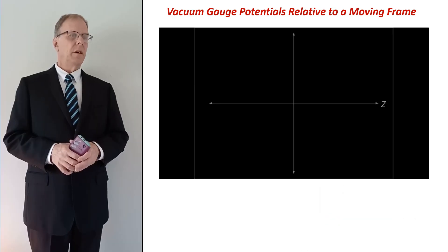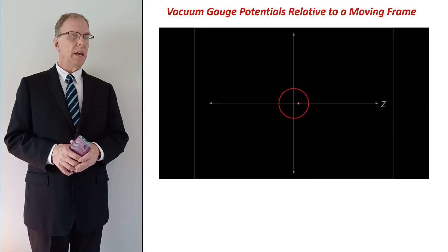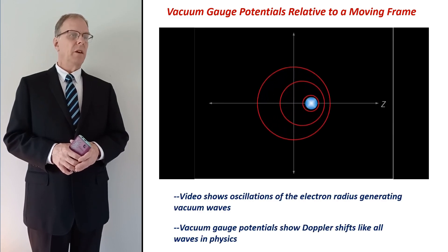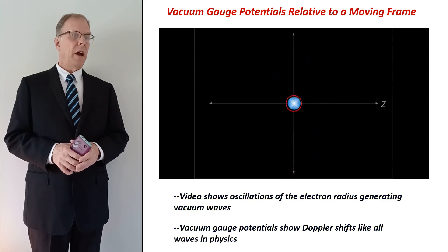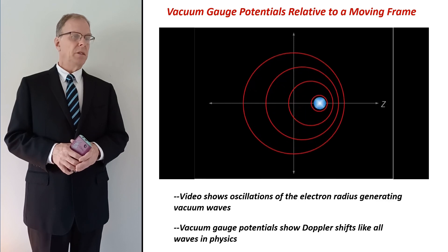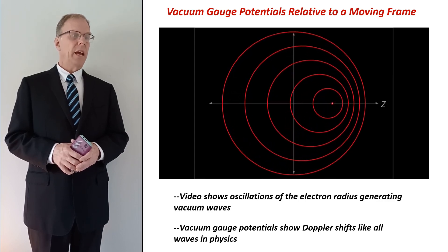Here's an illustration of what vacuum gauge potentials look like in space. This video clearly shows oscillations of the radius vector of the electron, generating vacuum waves as it moves to the right. The doppler nature of the field should be very familiar to any educated physicist.